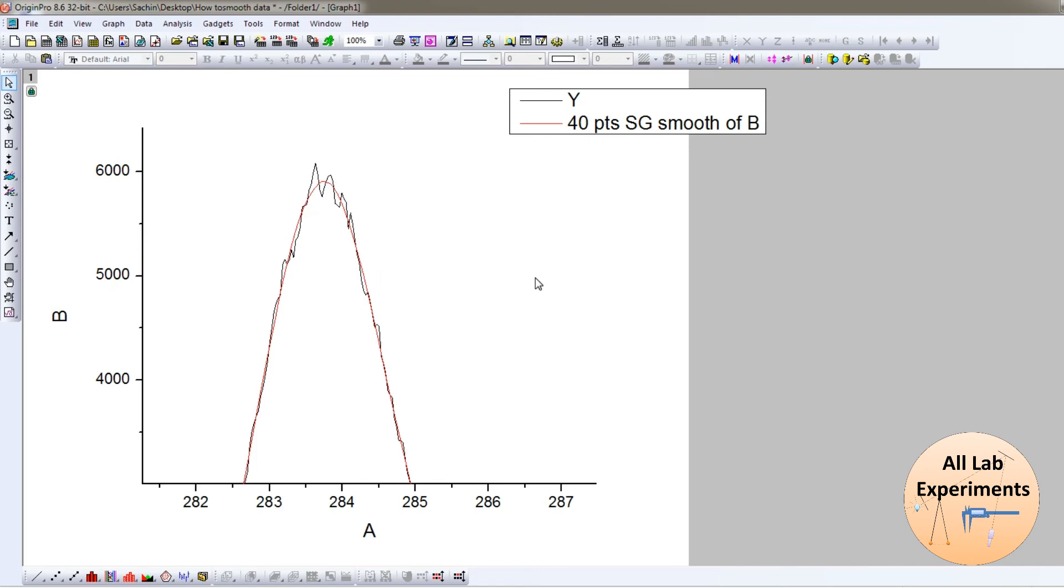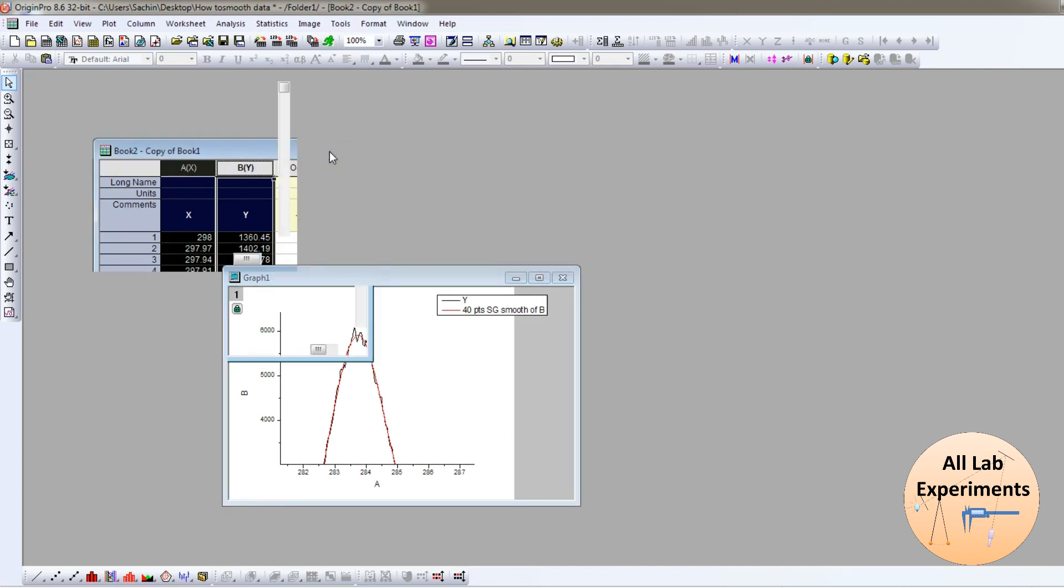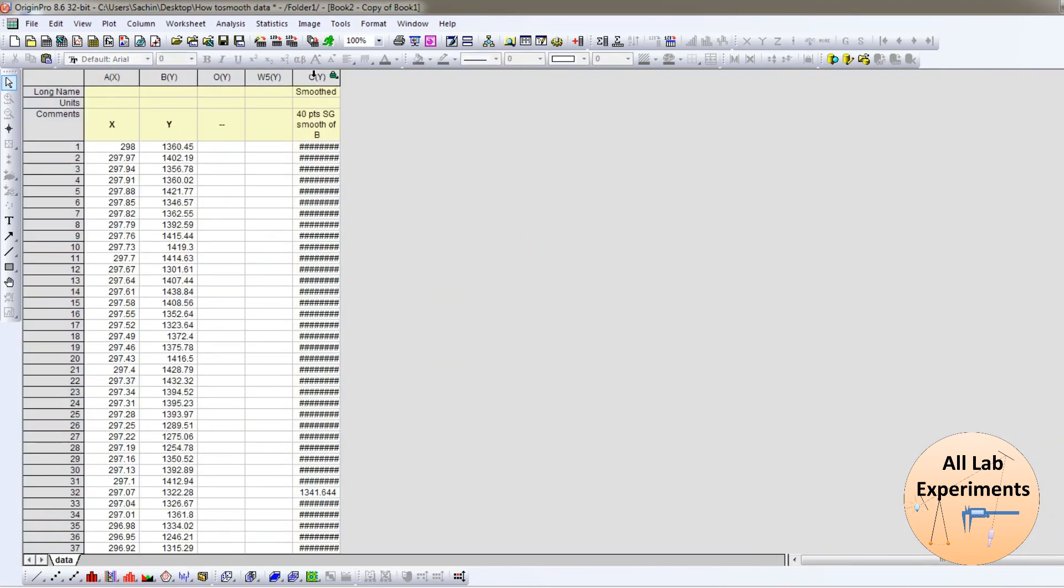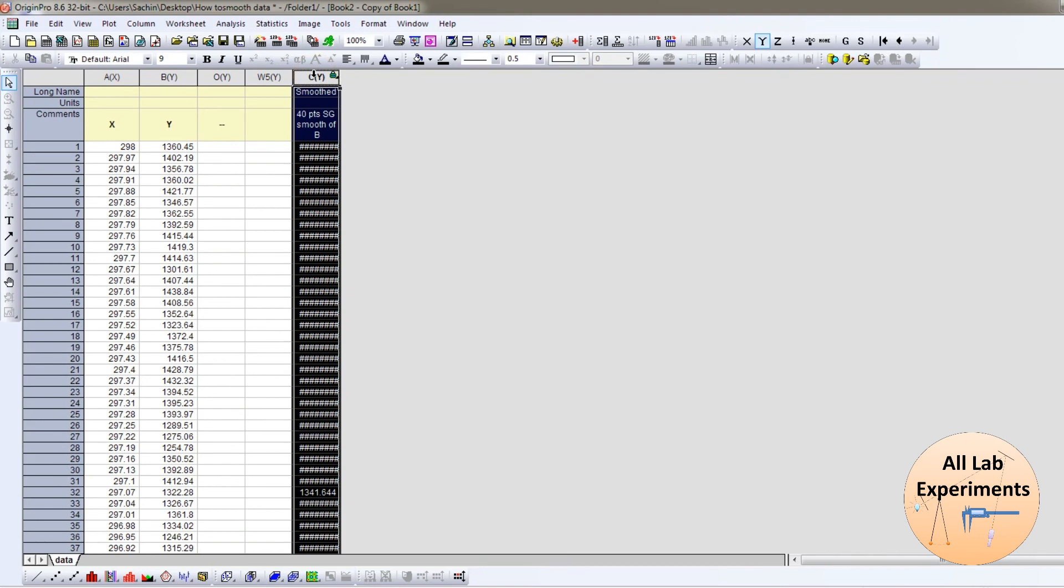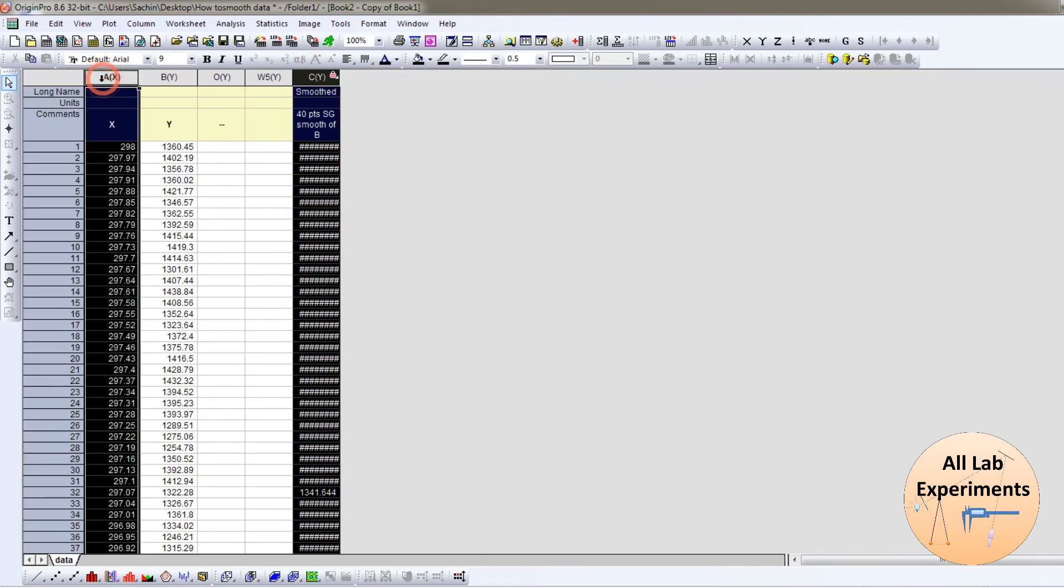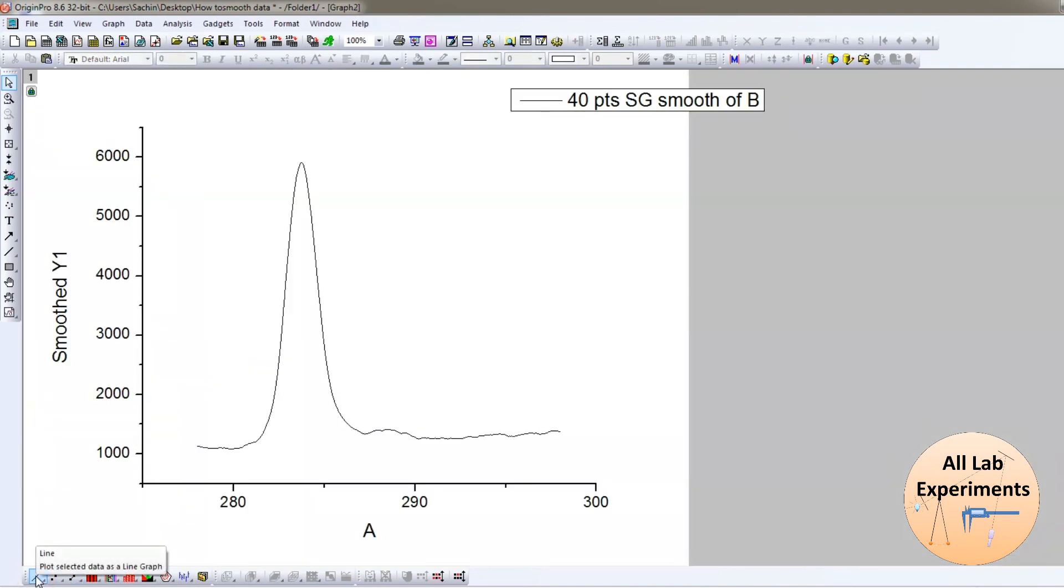Now here I am getting one black line which is my original data and one red line which is the smooth data. If I want the data of this smooth curve, I will go to my book, and in this book I have this smooth data. If I like to plot this, I will get this smooth curve which contains almost every information of our data.